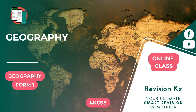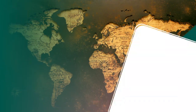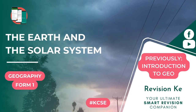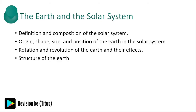We are in our second topic of the subject geography. In this topic we are going to look at the earth and the solar system. Previously we looked at introduction to geography. We are going to define the solar system, explain the origin of the earth, explain the effects of rotation and revolution of the earth, and finally describe the structure of the earth.